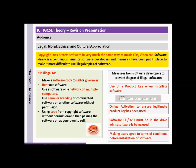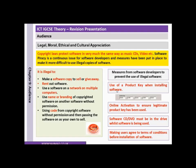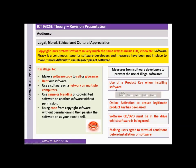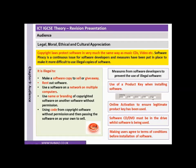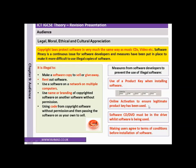Measures from software developers to prevent the use of illegal software include: most software requires the user to enter a product key when installing the software — for example, when installing Microsoft Office or Microsoft Windows you will be asked to include the product key. There is also online activation to ensure a legitimate product key has been used, and once the key has been activated online it can't be used again.